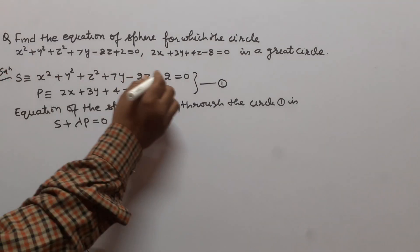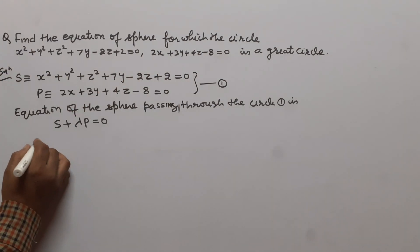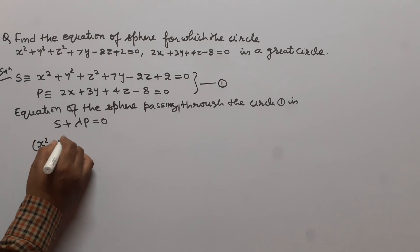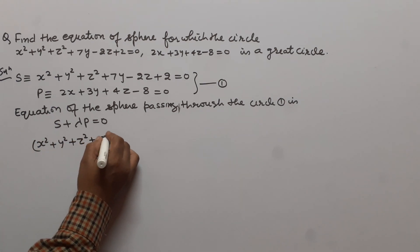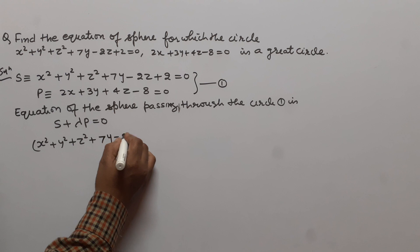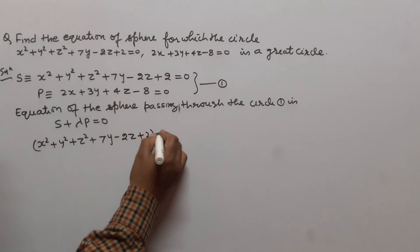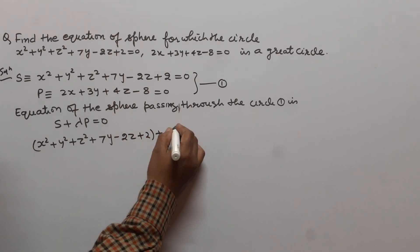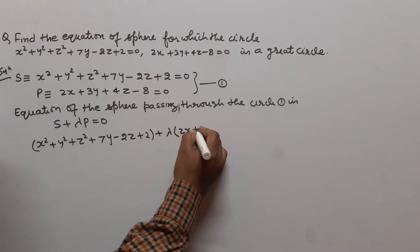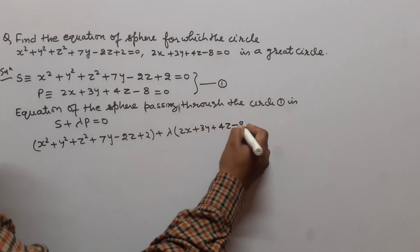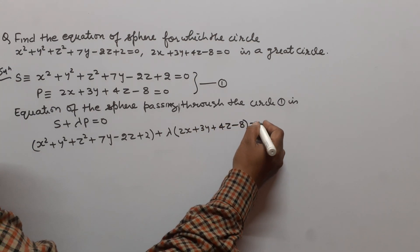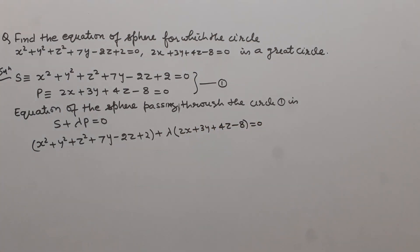So the equation becomes: x² + y² + z² + 7y - 2z + 2 + λ(2x + 3y + 4z - 8) = 0. This is the equation of the sphere passing through the given circle 1.